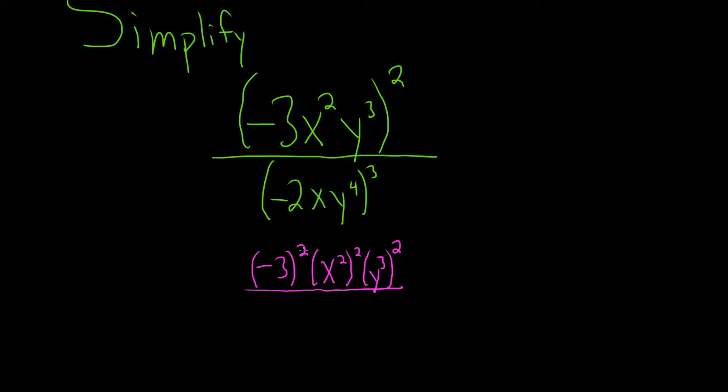on the bottom everything is being cubed, so you just cube each piece. So this will be negative 2 cubed, x cubed, and then y to the 4th cubed.